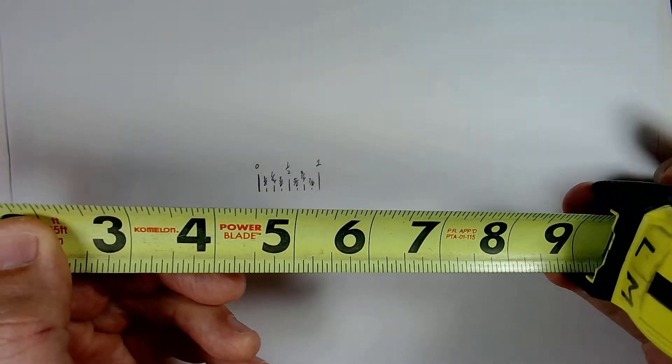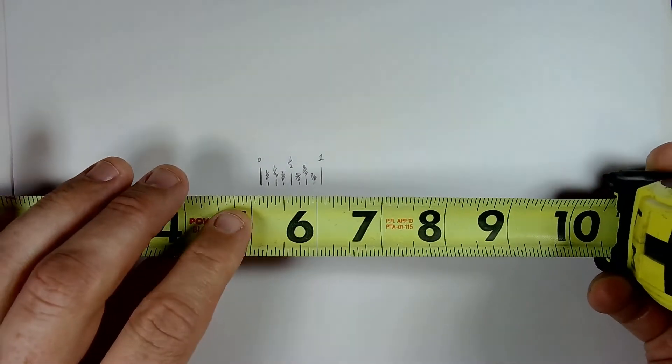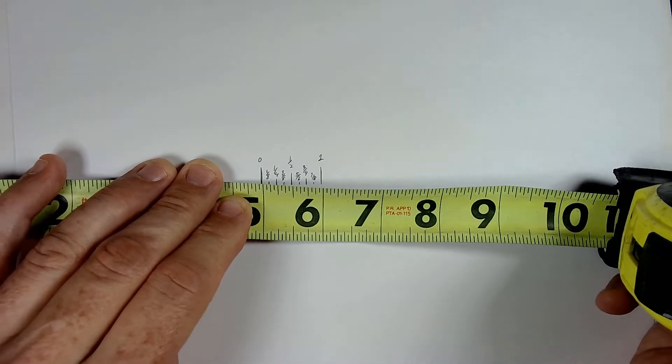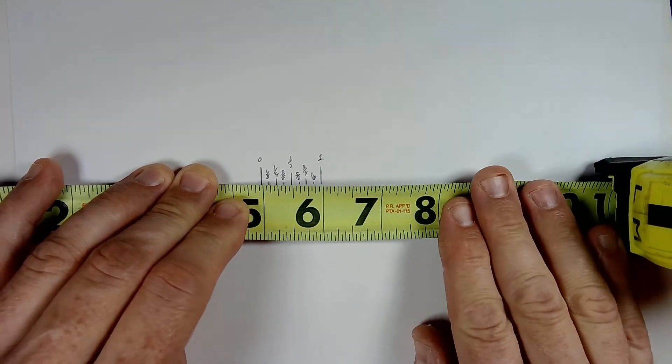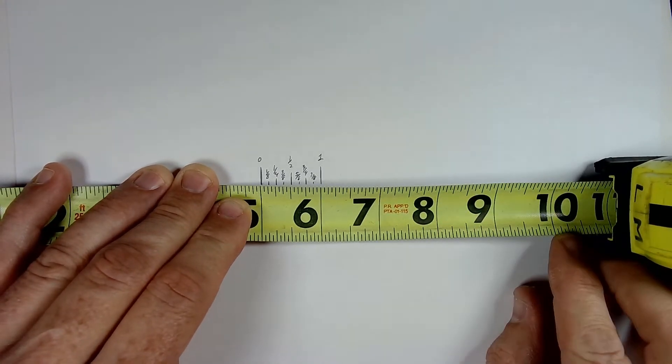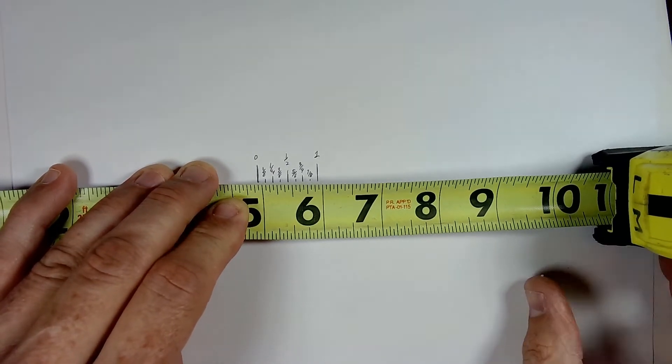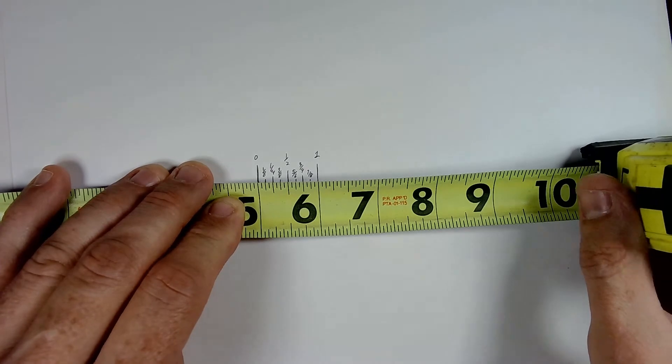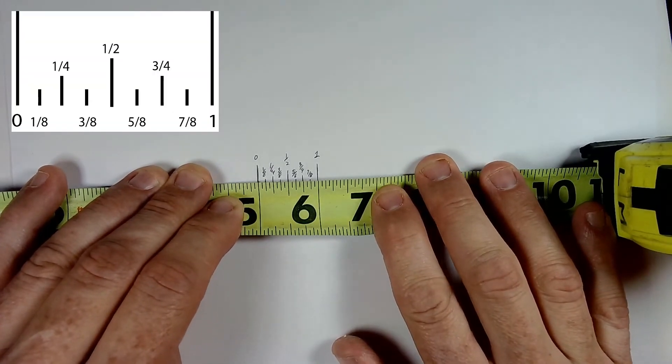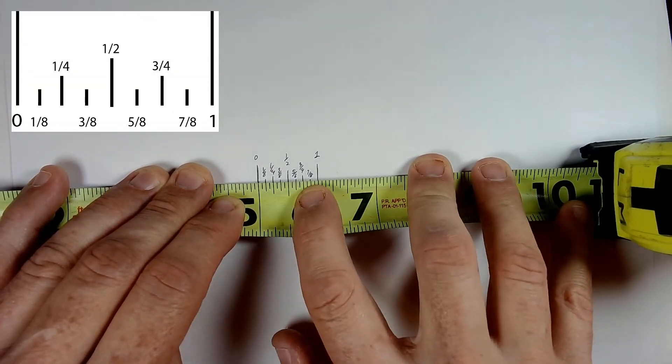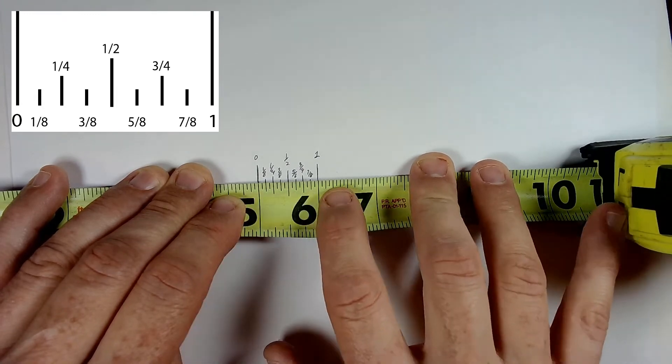And that scale, even though this is a different tape measure, is going to be the same. An inch is an inch, and hopefully that doesn't change from tool to tool. So you can see half, three-quarter, quarter, quarter, everything in between.